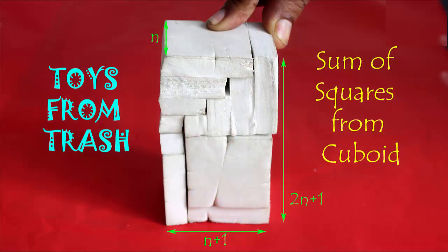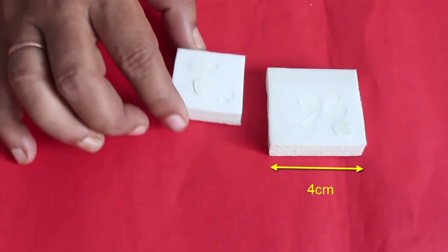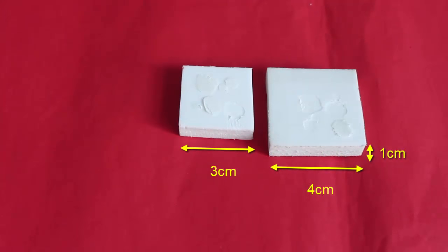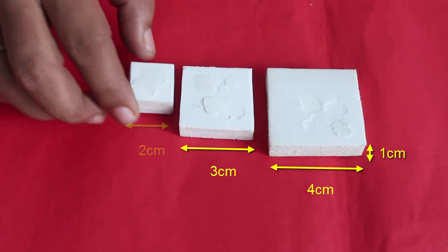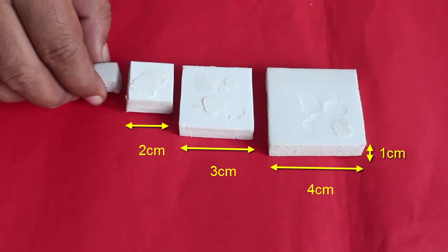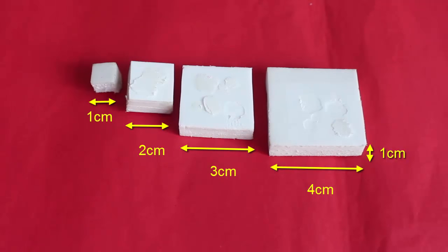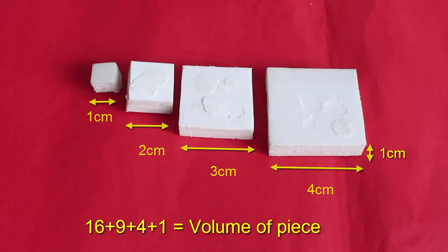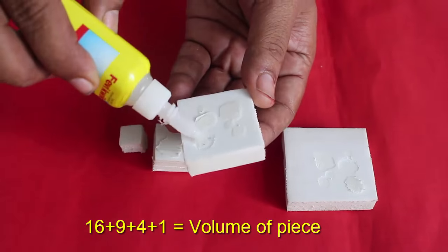We will first make squares of size 4 cm, 3 cm, 2 cm and 1 cm. The height of the rubber sheet is around 1 cm and so each of these square pieces has volume 4 square which is 16, 3 square 9, 2 square 4 and 1 square 1.